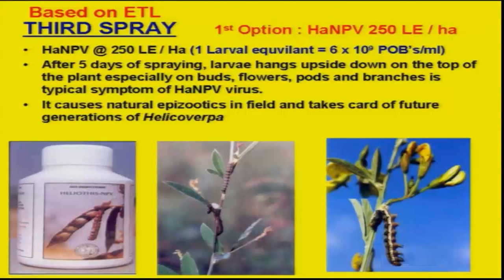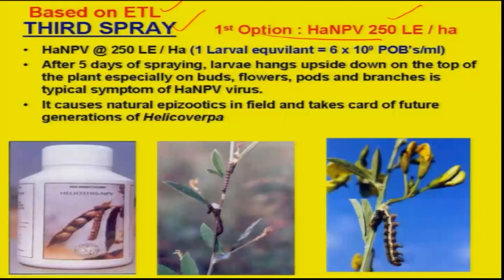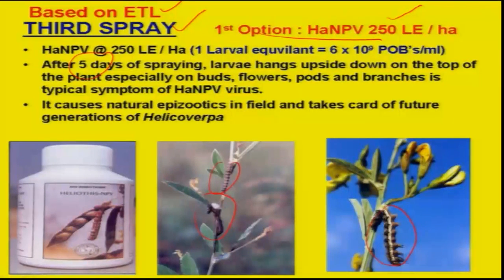Based on the economic threshold level, a third spray is recommended. As a first option, spraying of the microbial insecticide Helicoverpa NPV at the rate of 250 larval equivalents per hectare should be done. After five days, large numbers of fully grown larvae will be found hanging from the top of the plant — these are virus-infected larvae. Those larvae can be collected, crushed, and the suspension can be further sprayed either solely or in combination with any recommended insecticide, which is more effective.